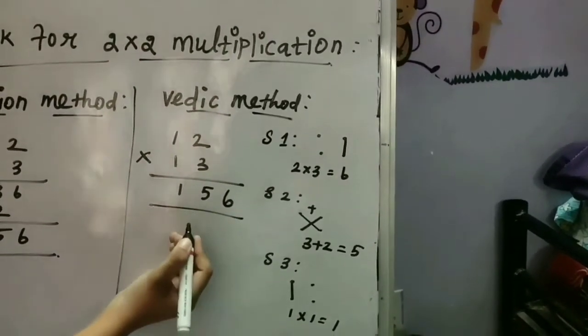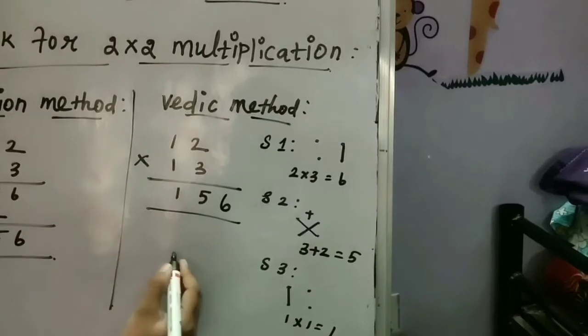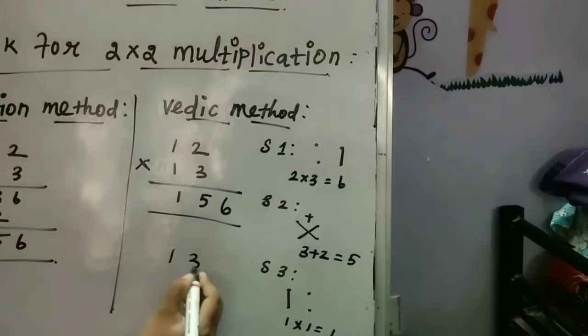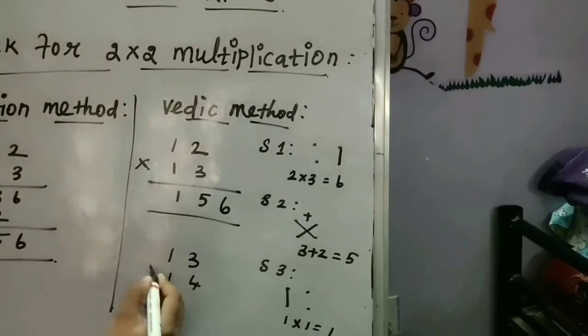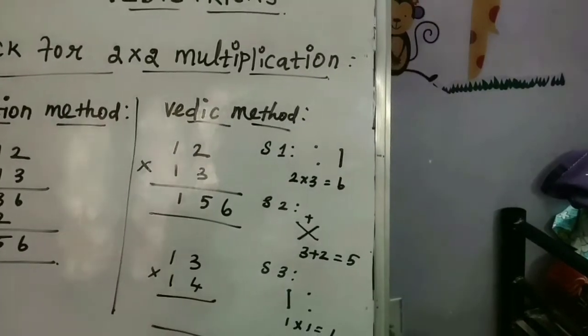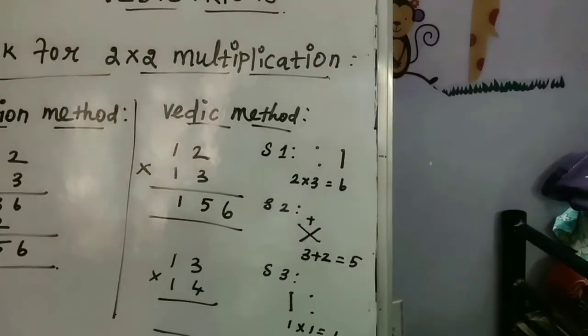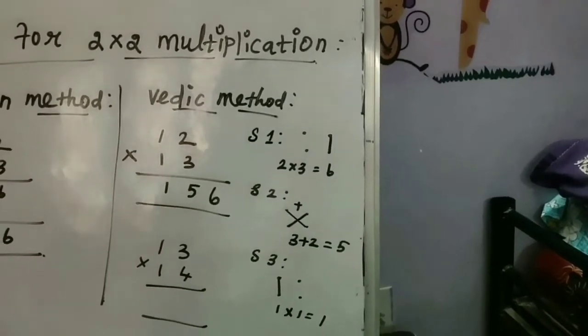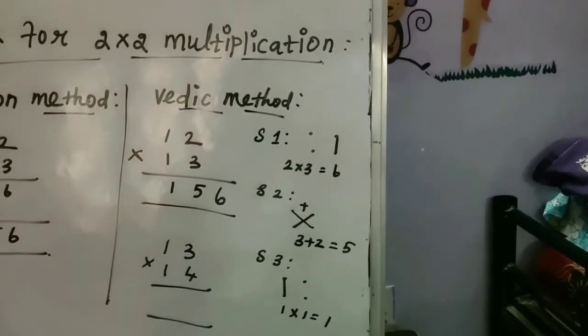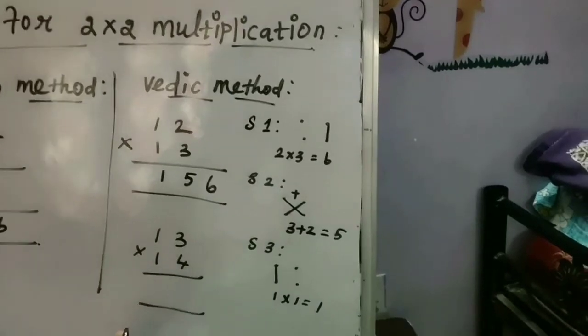So here are two digits for two digits. Within a single step we can easily get the answer. Now initially start with easy numbers like 12 into 13, 13 into 14. In such a way if you start practicing, it will be easy for you when you go for the higher numbers.